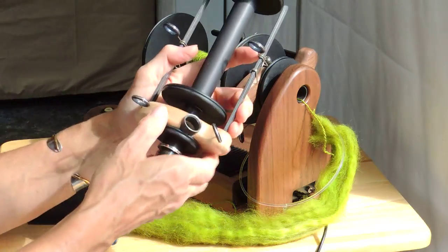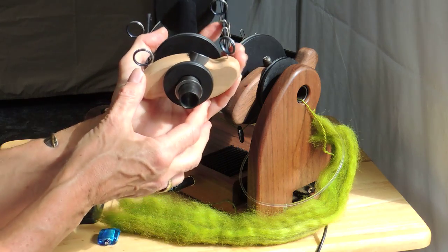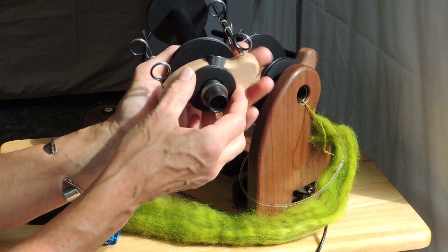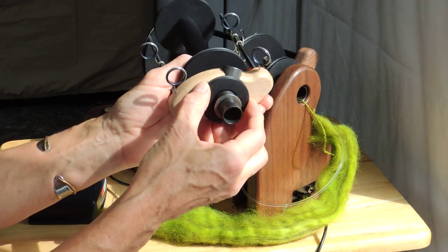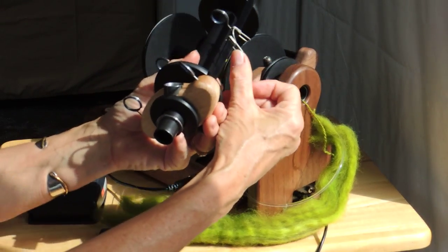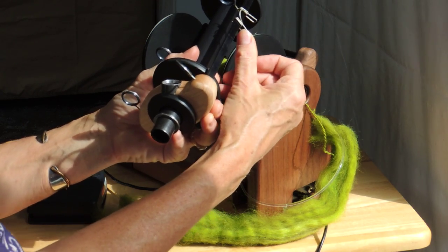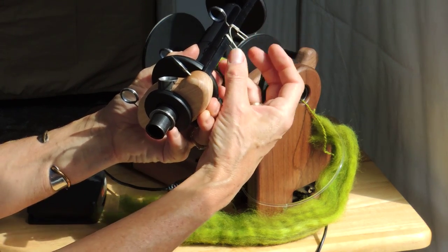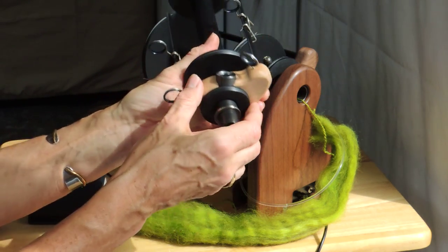For example I might want to do some lace spinning so I'd use our small high speed flyer. This one is in maple and by the way this is the walnut spinner. Again it's just a gentle nudge on the sliding eye because of the design.